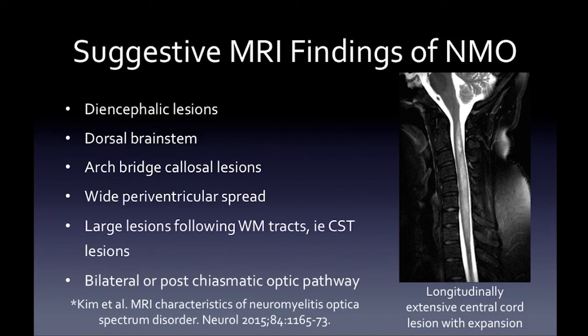Suggestive MRI findings of NMO include: diencephalic lesions, dorsal brainstem lesions, wide arc-bridge callosal lesions, non-specific wide periventricular hazy lesions, large lesions following white matter tracts like the corticospinal tract, bilateral or post-chiasmatic optic pathway lesions, and on cord imaging — a longitudinally extensive central cord lesion, because aquaporin-4 channels are concentrated around the central canal, as opposed to the peripheral cord involvement seen in MS.